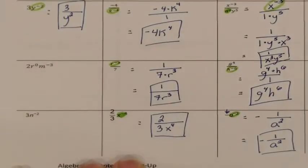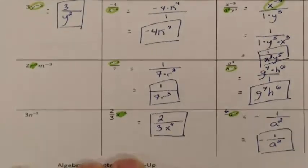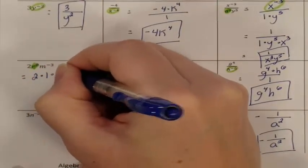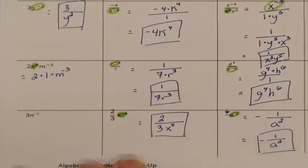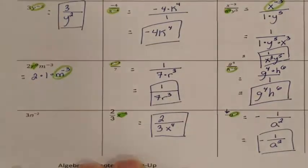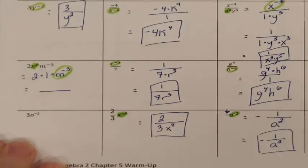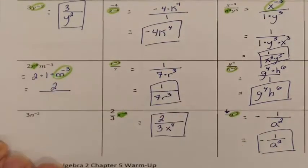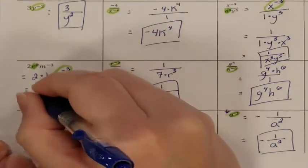Our next problem. I always look for zero exponents first. Here is my zero exponent — anything to the zero exponent is 1. So this is now 2 times 1 times m to the negative 3rd power, because it was 2 times r times the m's. Now looking for negative exponents: the m is the only thing that moves. Here's my fraction bar: 2 times 1 in the numerator equals 2, which stays. The m was in the numerator, moves to the denominator, and turns into a positive exponent. Final answer: 2 over m to the 3rd.